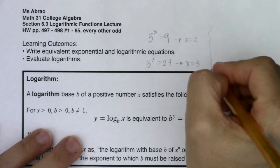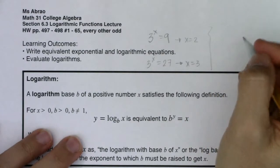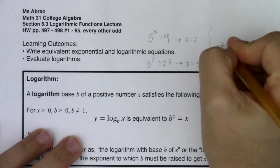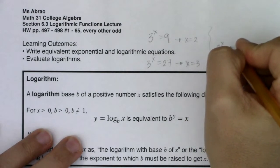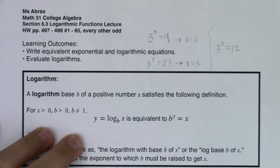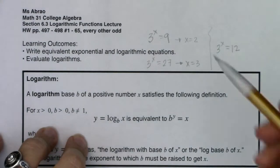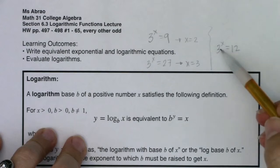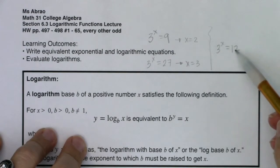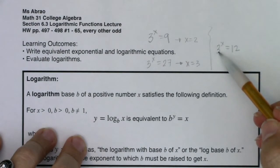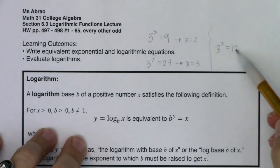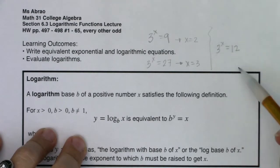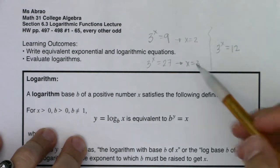But where things get a little funky is, what if I told you 3 to the x was equal to 12? What do you do when the number on the right side is not a power of this base? 12 is not a power of 3, so what do I do there?